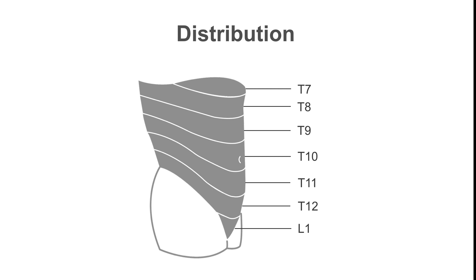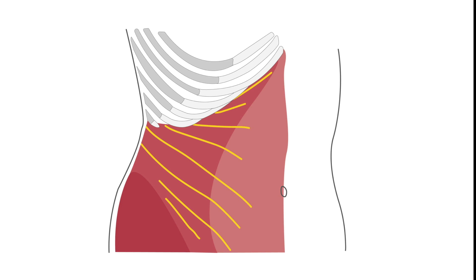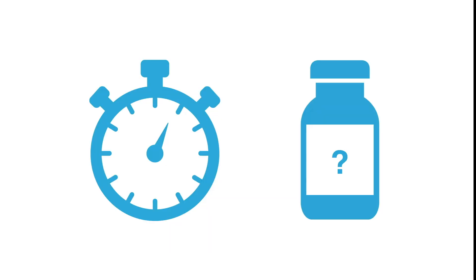The anatomy behind the TAP block, or transverse abdominus plane block, can best be understood from a dermatomal perspective. Note the zones innervated by roots T10 through L1 — these are the nerve roots and the distribution you can expect from a successful TAP block. A good way to remember this is that the belly button is covered by dermatome T10. The nerves spread along the muscle layers and fascial layers like finger-like projections, which is why this block relies more on diffusion of anesthetic along the fascial plane.